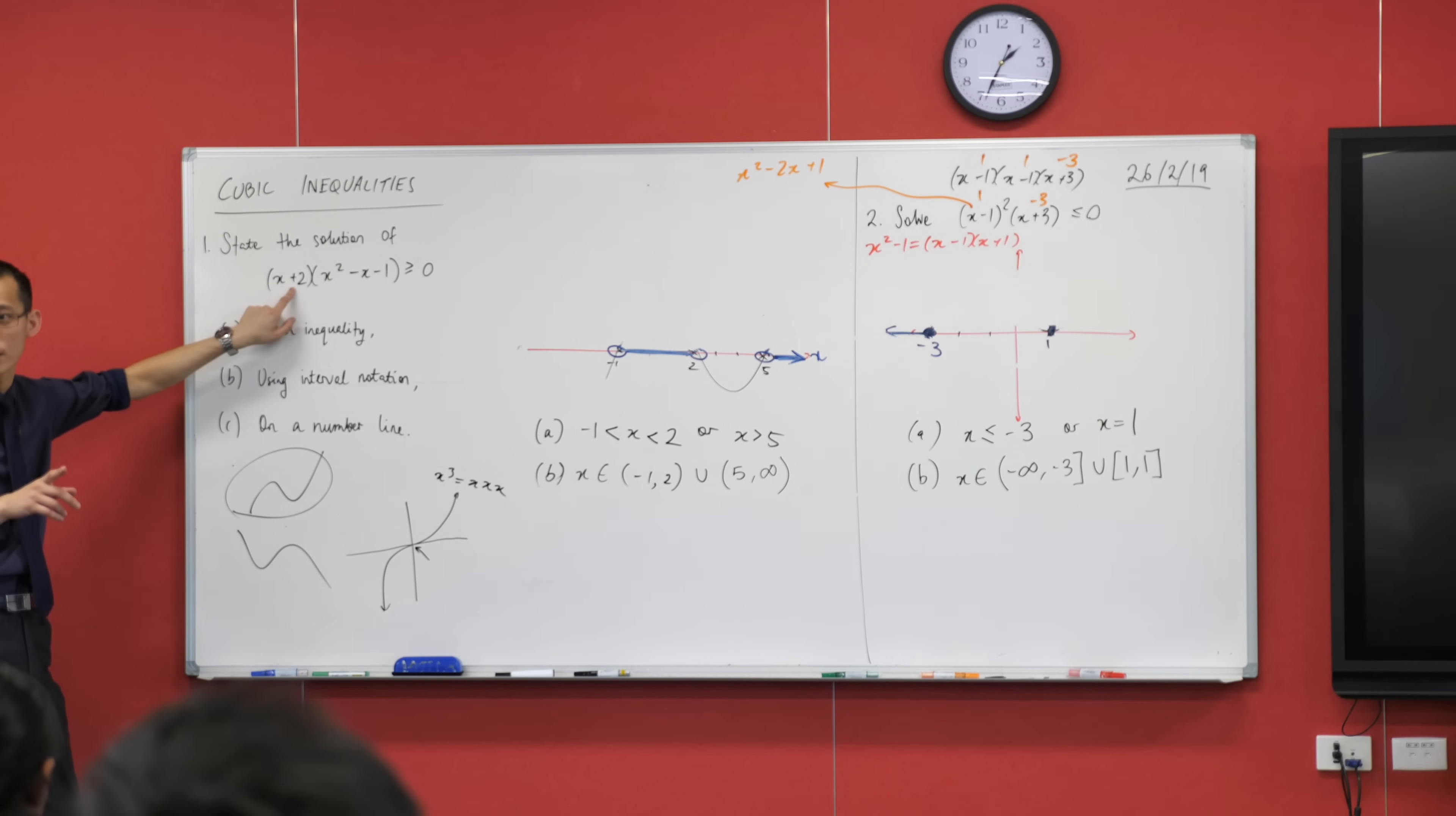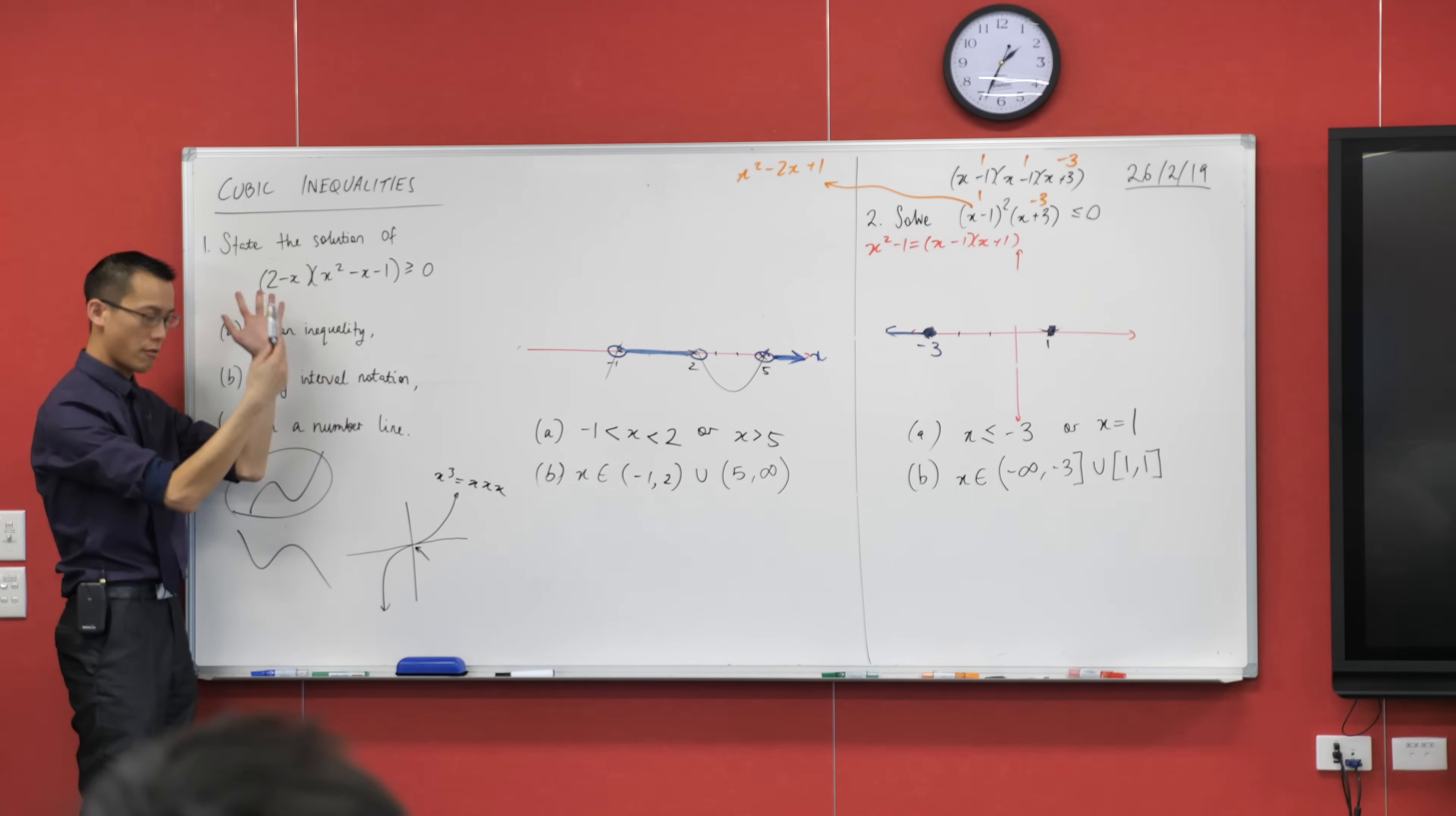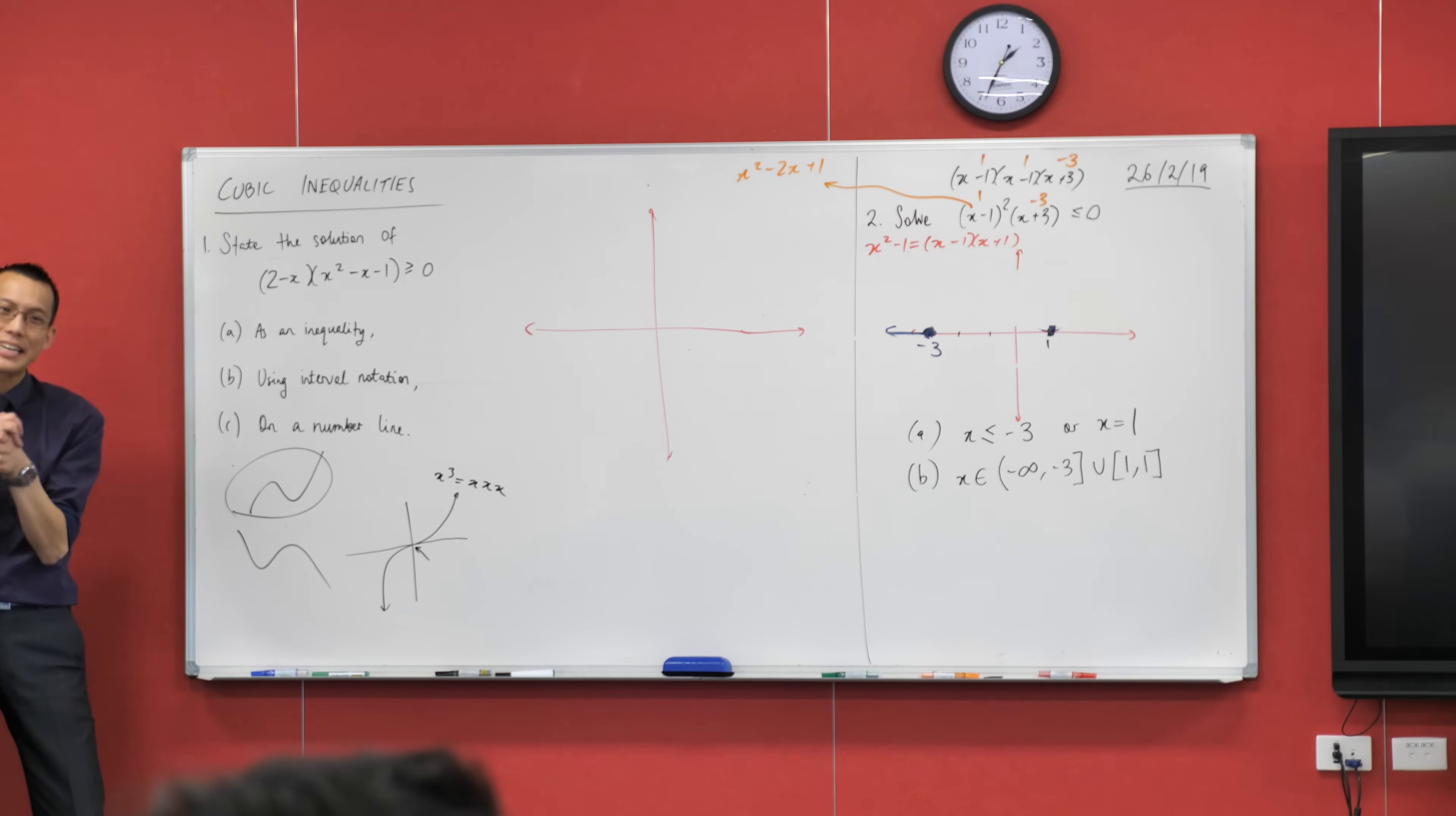Quick question. Did anyone do this one yet? Good, because I want to make a minor change to it. Okay, there we go. Right, so this one says two minus x. That's messy, I'll write it again. Two minus x. And then in the other brackets it says x squared minus x minus one greater than or equal to zero.